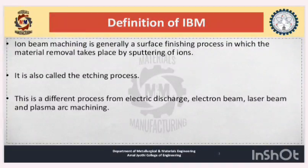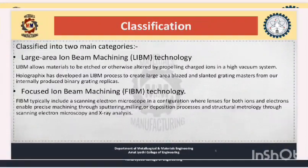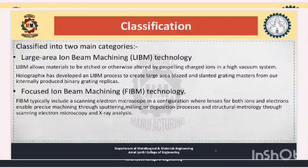Ion beam machining is classified into two types. The first is large area ion beam machining technology, simply called LIBM. These allow materials to be etched or otherwise altered by propelling charged ions in a high vacuum system.